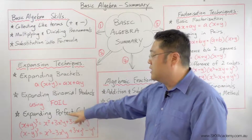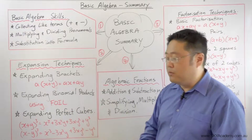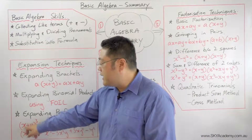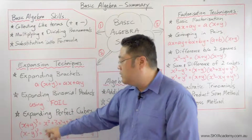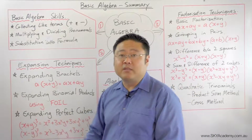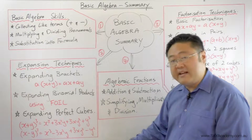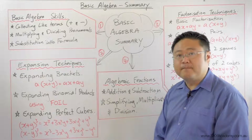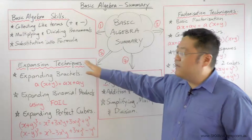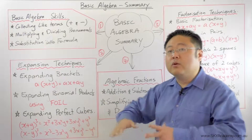We also got to see how that applies to perfect cubes. The general formula was: (x + y)³ equals that expression, and (x − y)³ equals that expression.